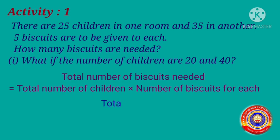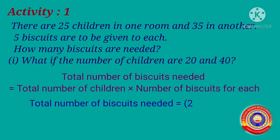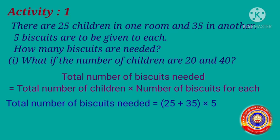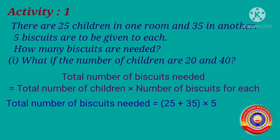Total number of biscuits needed is equal to 25 plus 35 into 5. Put 25 and 35 in brackets. First we have to add 25 and 35 in brackets, then multiply it with 5. 25 plus 35 is equal to 60. Then 60 into 5 is equal to 300 biscuits.